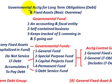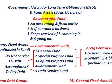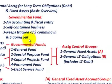What we're going to be going over here is governmental accounting for long-term obligations. That would include long-term debt and also fixed assets. Looking at a basic overview of how we handle long-term debts and obligations for fixed assets when we're dealing with governmental units and governmental bodies. When dealing with governments and accounting for governments, we really have to deal with our governmental funds.